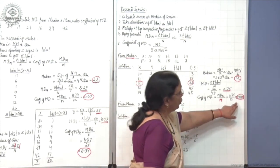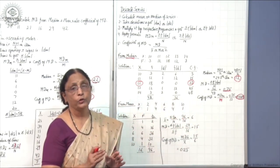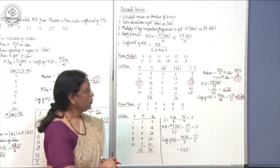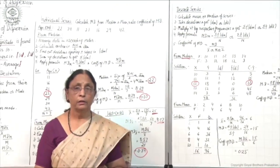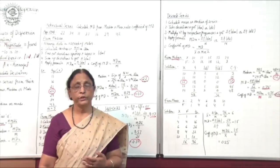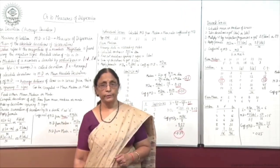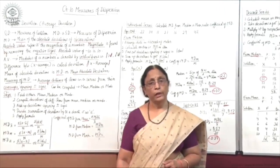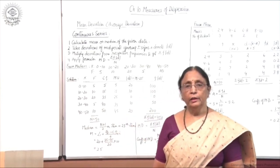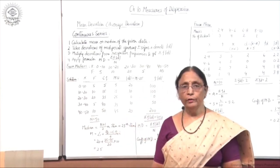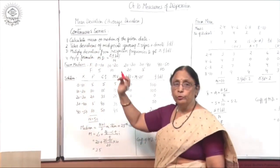This way we can do the calculation of mean deviation — either from mean or from median — in individual series and discrete series. Next we will take calculation in continuous series. In continuous series, these are the steps you are supposed to follow.